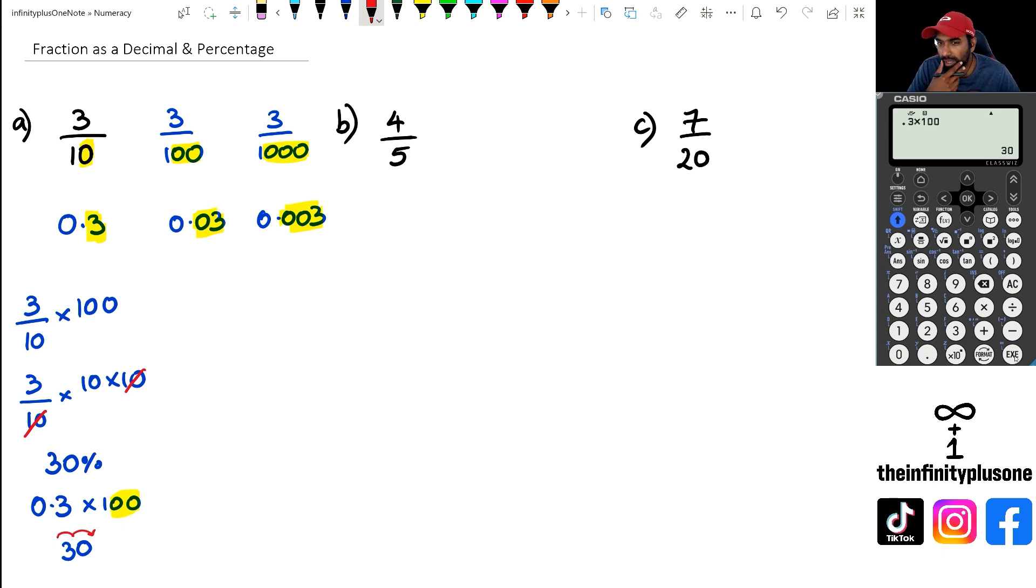Okay, so this is when your denominators are multiples of 10, but what about when you have 4 over 5? So the first thing we want to do is we want to convert this so that the denominator is 10 or 100 and so on. So what I'm going to do is I'm going to multiply the denominator by 2 and also multiply the numerator by 2. When I do this, I'm going to get 4 times 2, which happens to be 8, and then 5 times 2, which happens to be 10. So I've got 8 over 10.